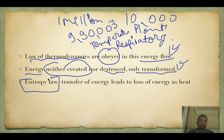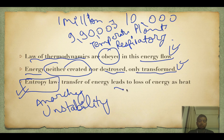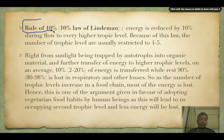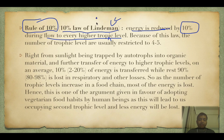The entropy law says that if any system is left to itself it goes to disorder — it increases entropy and instability — so you have to constantly supply active energy to prevent that. The 10% rule is also called the 10% law of Lindemann: energy is reduced by 10% during flow to every higher trophic level.